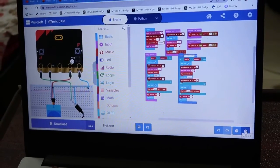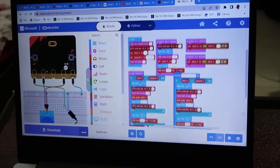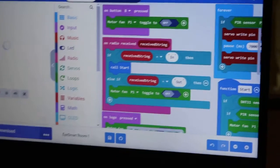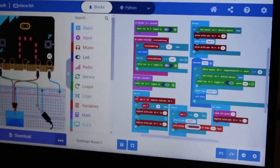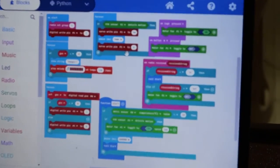So this is the code for the main door microbit. So as you can see, this is the code here. This is the code for the microbit of room one. And this is the code for the microbit in room two.